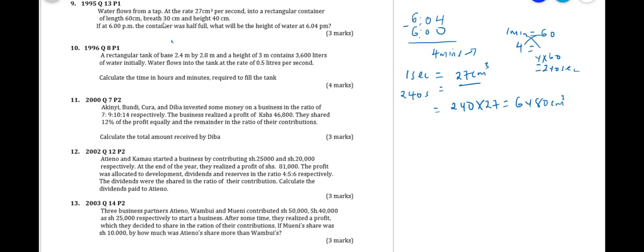Half full, which means that the height of the container is 40 when it is full. Half full, then the original height at 6pm, since the container is half full, is 40 divided by 2, which is 20 cm.